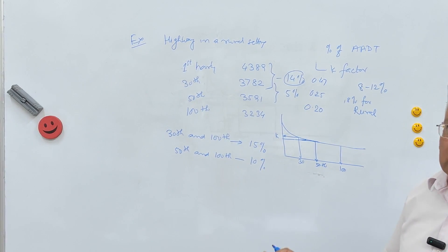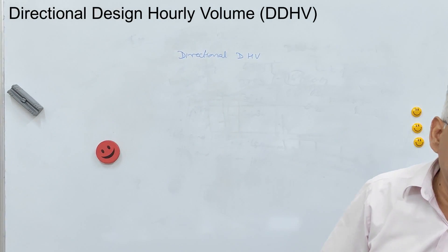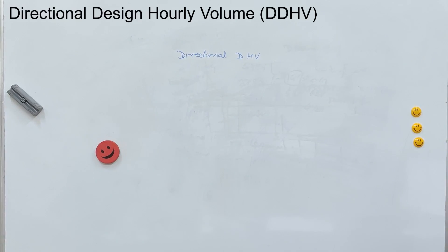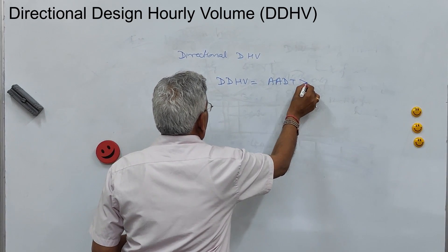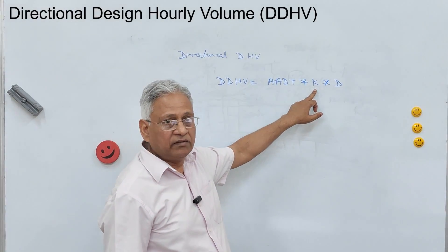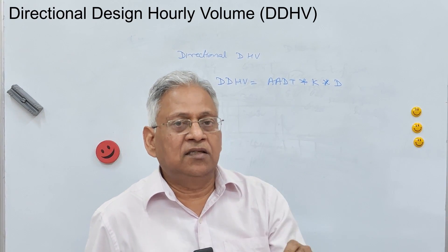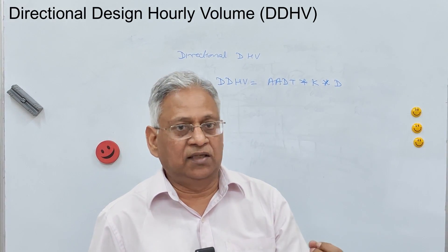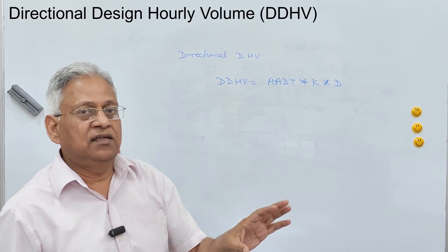Another related concept is Directional Design Hourly Volume (DDHV). This is the proportion of AADT in the peak hour (design hour) in the predominant direction of traffic flow. DDHV equals AADT multiplied by the K factor multiplied by the D factor. The D factor is the directional traffic factor — the proportion of traffic in the predominant direction. For example, if traffic is split 60-40 between two directions, then D equals 0.60.